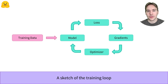Before we dive into the code, here is a sketch of a training loop. We take a batch of training data and feed it to the model. With the labels, we can then compute a loss. That number is not useful on its own, but is used to compute the gradients of our model weights — that is, the derivative of the loss with respect to each model weight.